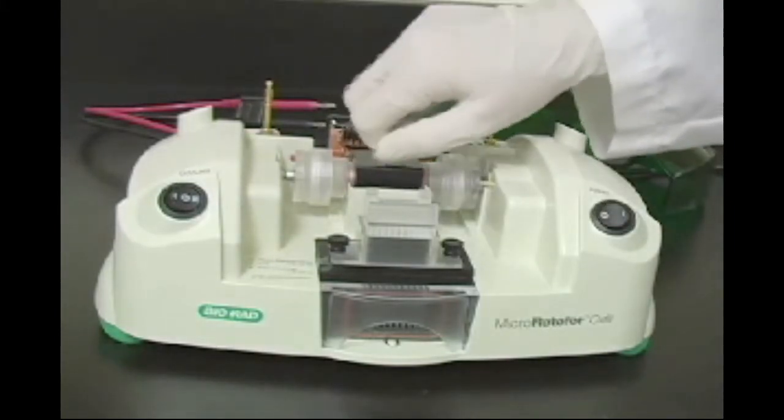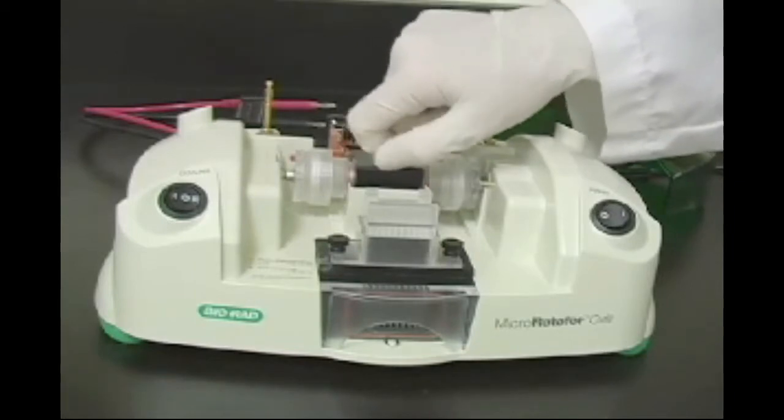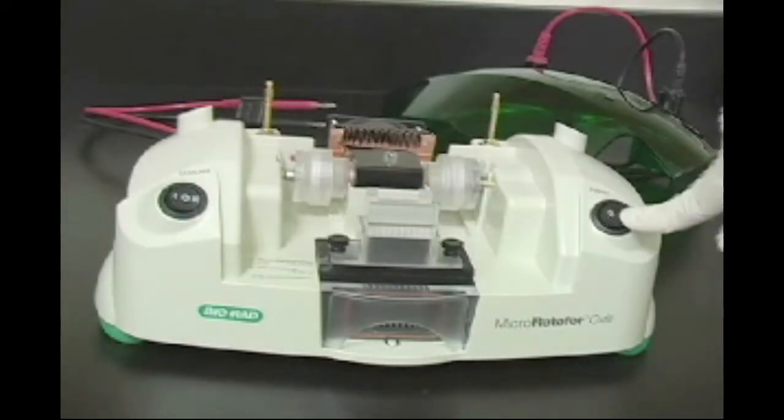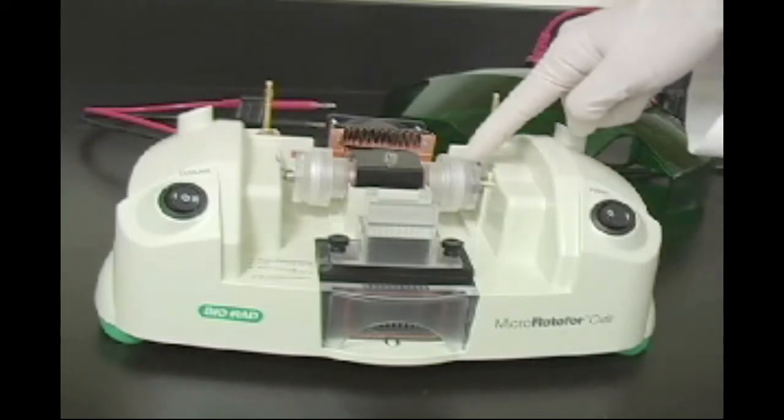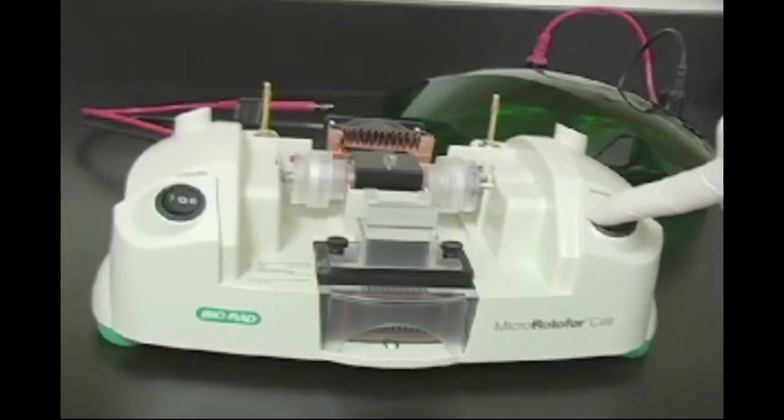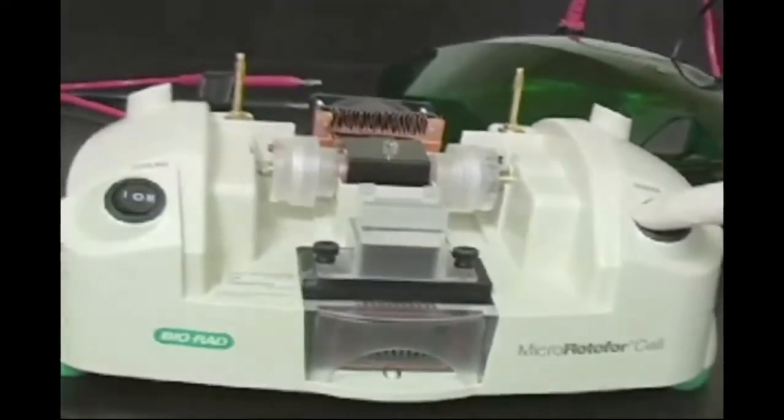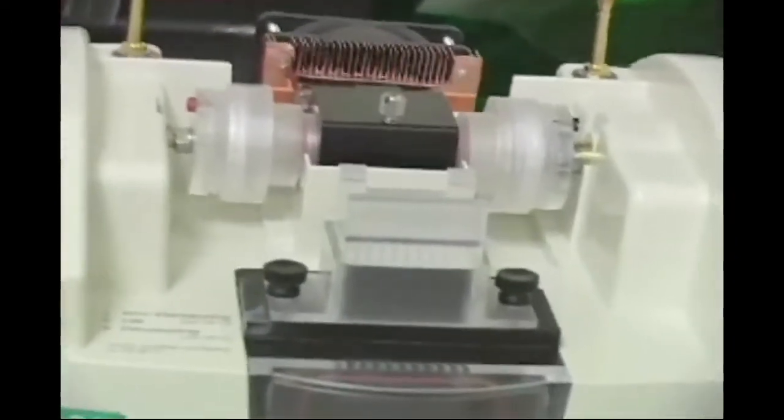Close the cooling block and tighten the screw. Turn the power switch to on and make sure the focusing chamber rotates freely within the cooling block. If it does not, loosen the lid by turning the screw on the cooling block counterclockwise until the focusing chamber can move freely.